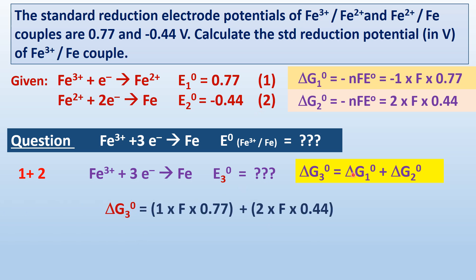On substituting in this expression, delta G₁⁰, delta G₂⁰ in this expression, we will get delta G₃⁰.